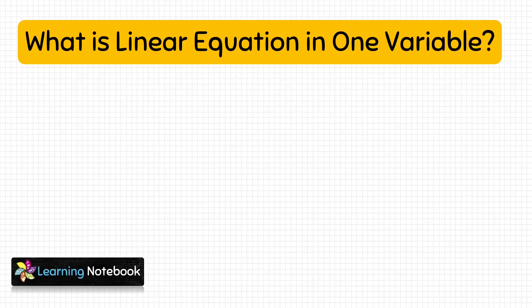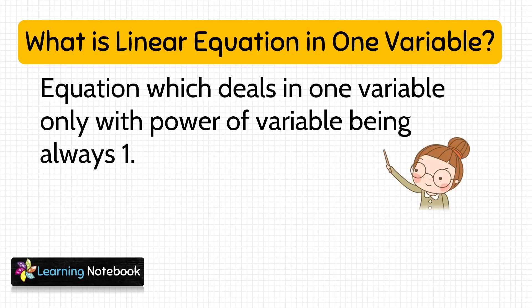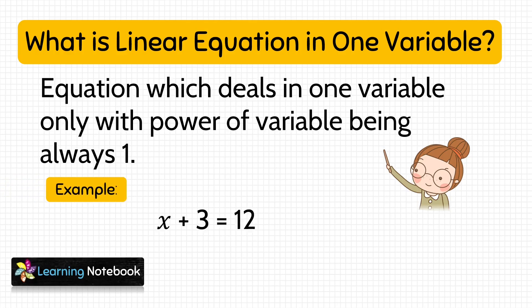Before starting with the activity, let's first understand what is a linear equation in one variable. An equation which deals in one variable only, with the power of the variable being always 1, is called a linear equation in one variable. For example, x plus 3 equals to 12 has only one variable x and x's power is 1, so this is a linear equation in one variable.